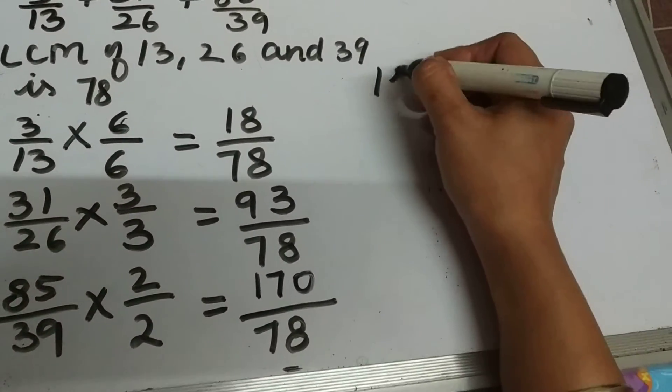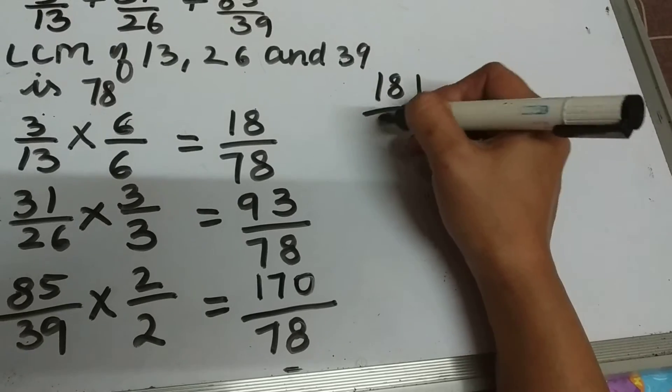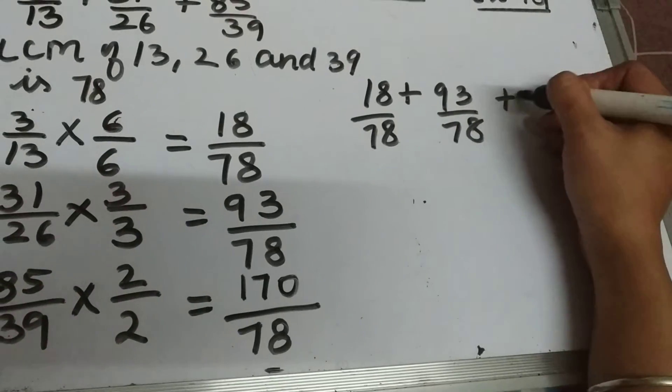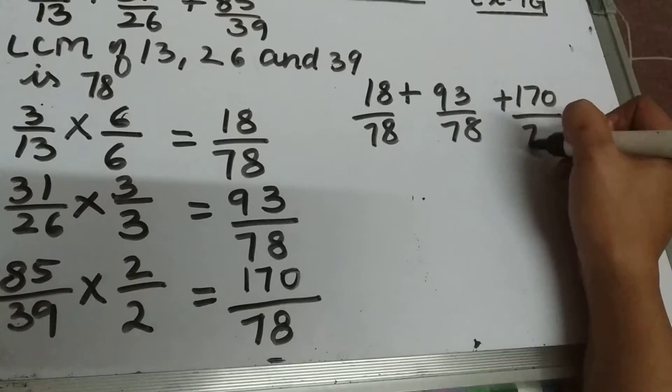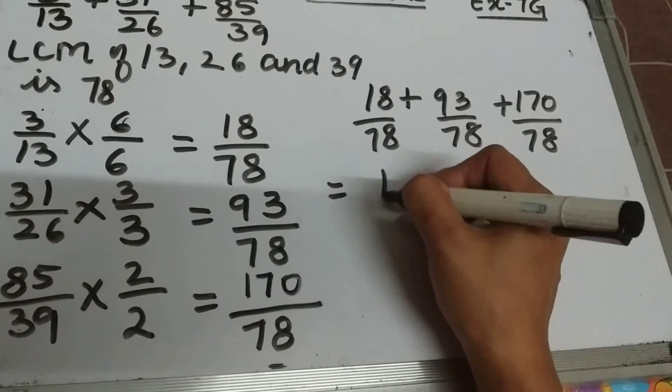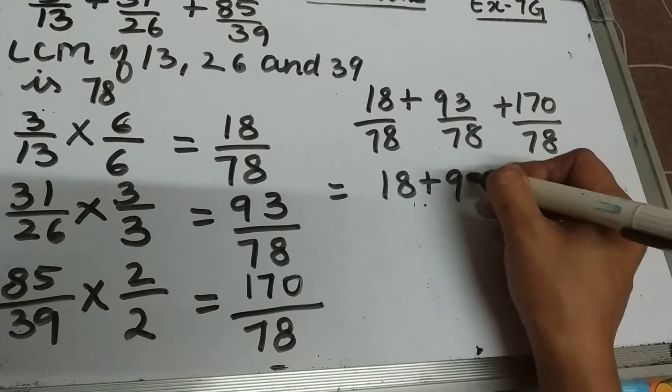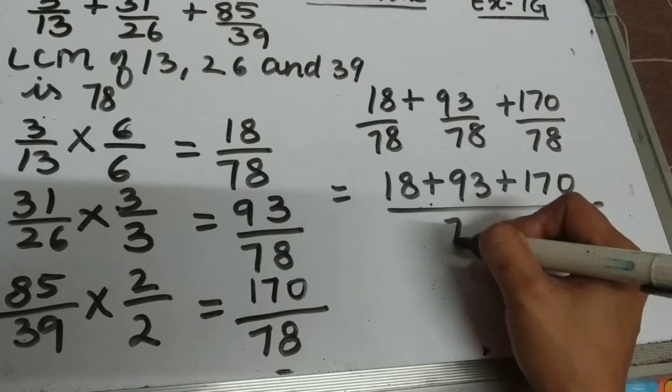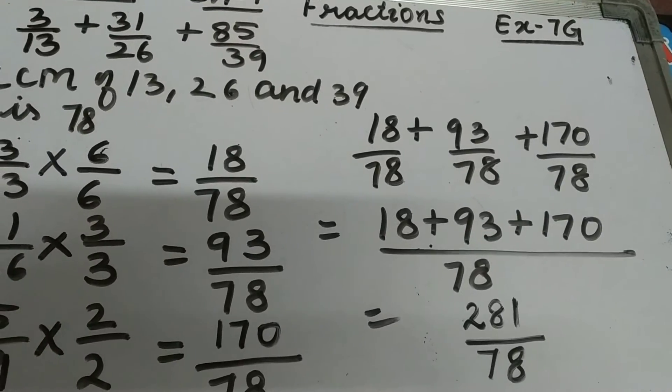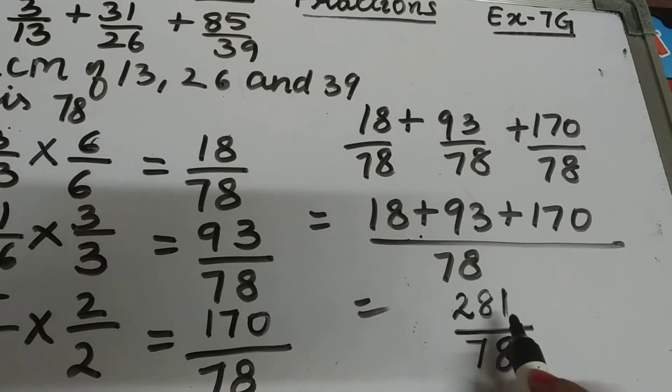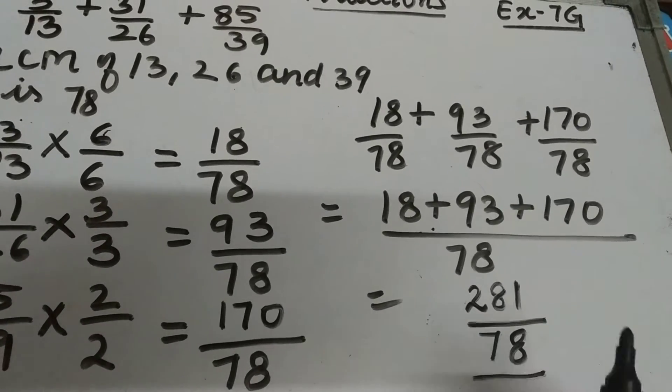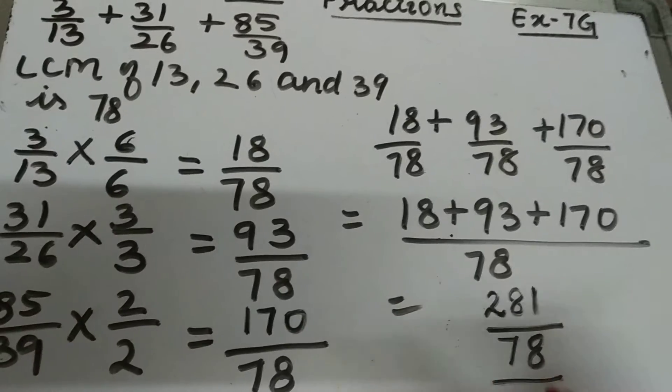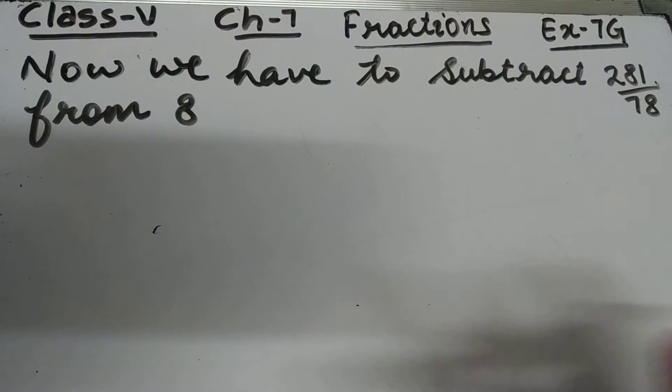Now add these three: 18 upon 78 plus 93 upon 78 plus 170 upon 78. So the sum will be 281 upon 78. Now what we have to do is subtract this sum from 8. So let's start.